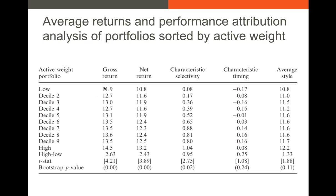So how much of the performance in terms of returns came from the manager's ability to select the right stocks versus their ability to time the market. Looking at the gross returns and net returns, there appears to be a completely linear relationship — the funds with the highest returns do appear to have better selectivity ability, whereas funds that are less actively managed appear to have lower returns and also less ability to pick good stocks.